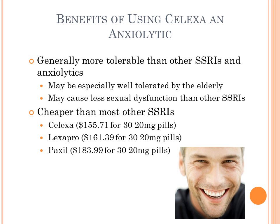There are some clear reasons why Celexa might be more advantageous than other anxiolytics or other SSRIs. For example, Celexa is generally more tolerable than other SSRIs or anxiolytics. As noted, SSRIs are one of the more tolerable drug classes, and for Celexa to be one of the most tolerable among them is significant. This really manifests with the elderly, who have more frail bodies and can't handle side effects as well — Celexa's lessened side effects are a real advantage in that regard.